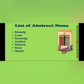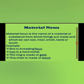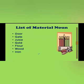The fifth kind is material noun, which in Urdu is called ism-e-mawad. Material noun is the name of things we can see, touch, and hear — it is the opposite of abstract noun. For example: 'She is kneading flour' — flour we can see and touch. 'Iron is a hard metal,' 'The ring is made of gold,' and 'This chair is made of wood.' So flour, iron, gold, and wood are material nouns. Similarly, door, gate, juice, gold, floor, wood, and iron are all material nouns.